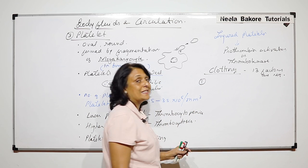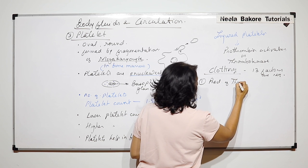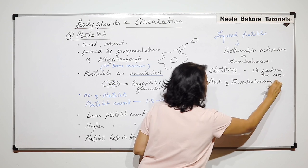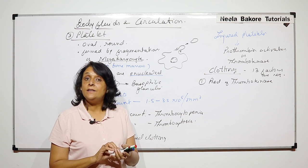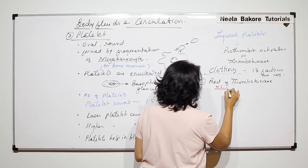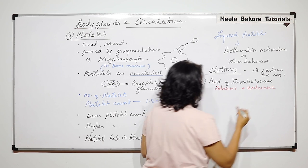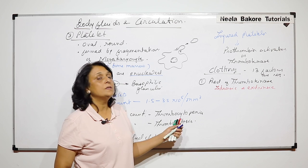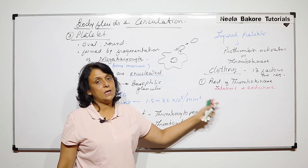The first step of the clotting process is production of thrombokinase. This can be produced by two pathways: intrinsic and extrinsic. Intrinsic means internal injury and extrinsic means external injury, but ultimately the platelet is ruptured and releases the substance.